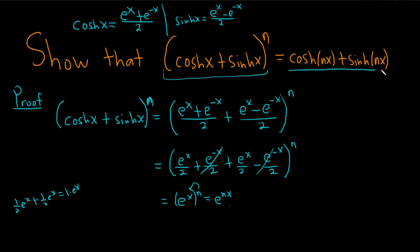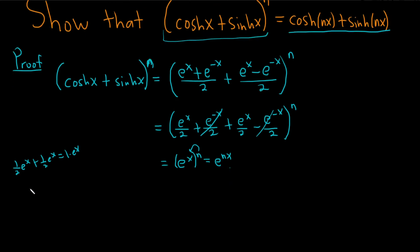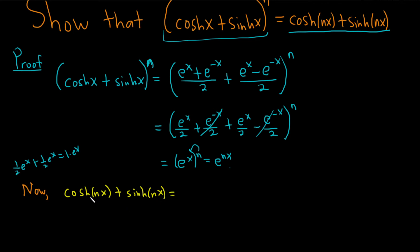So now what we'll do is work out the right-hand side and see if we get the same thing. Let me use a different color. So now let's work out the right-hand side: cosh of nx plus sinh of nx. This is a pretty cool problem. This is equal to: cosh is the average, so it'll be (e to the nx plus e to the negative nx) divided by 2. And then plus sinh, which is half the difference, so it's (e to the nx minus e to the negative nx) divided by 2.